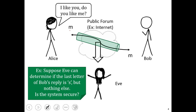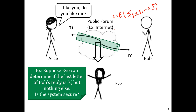For example, suppose Eve can determine if the last letter of Bob's reply is 's' but nothing else. Alice has asked, 'I like you, do you like me?' So it's natural to assume that Bob is either going to reply yes or no. Bob encrypts yes as C, and when we give C to Eve, she can determine if it ends in 's' or not. So given this single bit of information, all secrecy is lost.